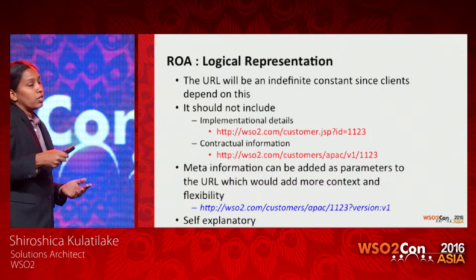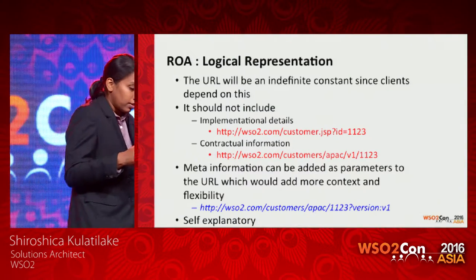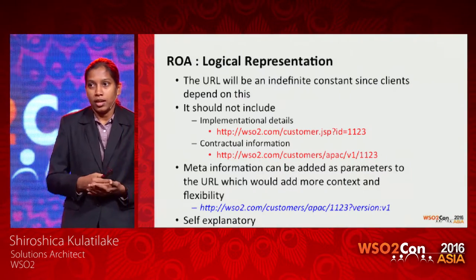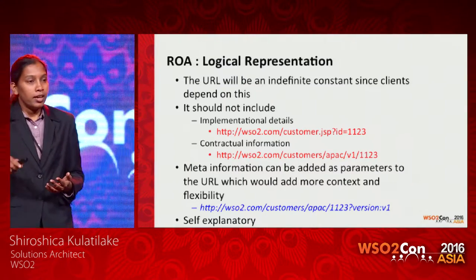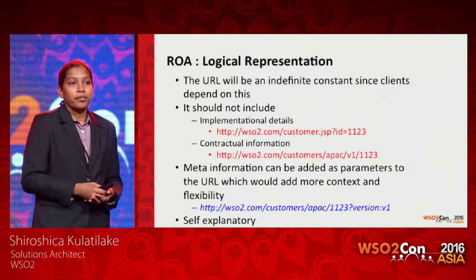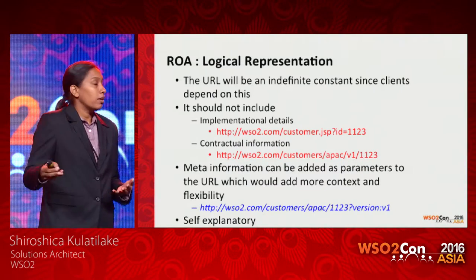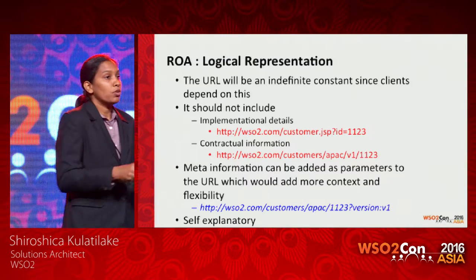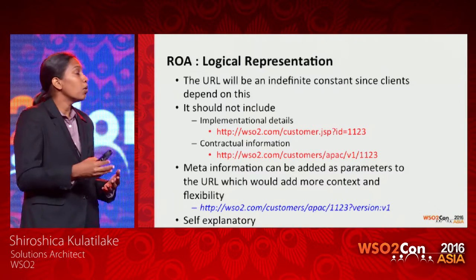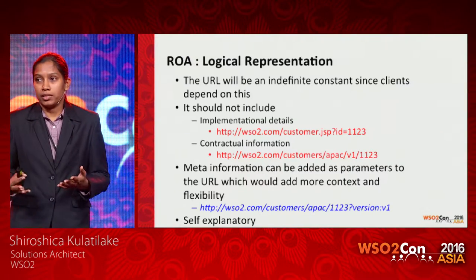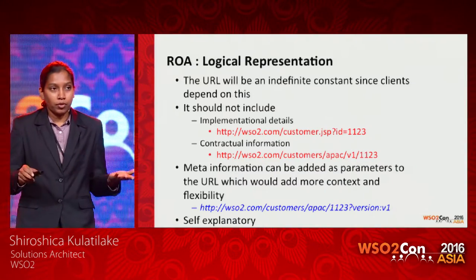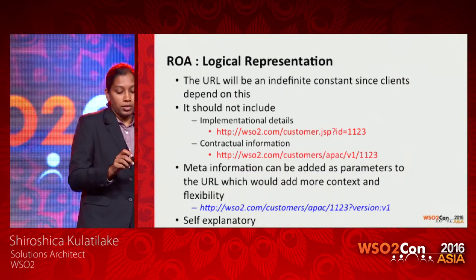The resource URL needs to be logical. Clients will be linking up to these URLs, so the resource should be an indefinite constant. It should not include implementation details — like what backend server is being used or what data format is returned. For cases where you need such information, you have the liberty of using parameters to carry that meta information, keeping the unique resource identifier constant while adding more flexibility. And of course, what you use as the name needs to be self-explanatory.